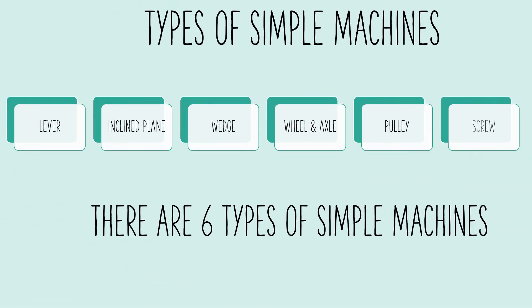Types of simple machines: lever, inclined plane, wedge, wheel and axle, pulley, and screw. There are six types of simple machines.